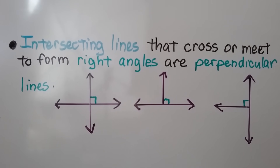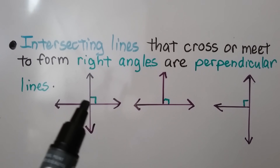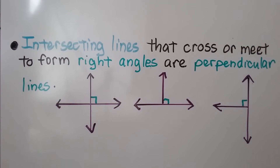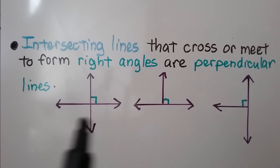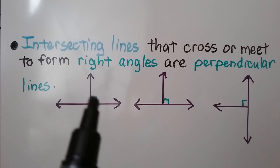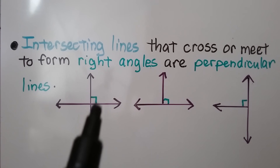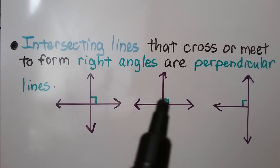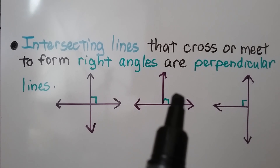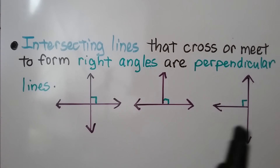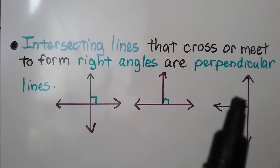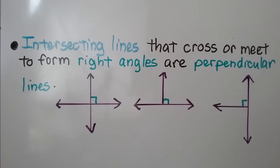Intersecting lines that cross or meet to form right angles are perpendicular lines. So these are all perpendicular lines because they make right angles in the middle here. We have two here, one on this side, one on this side, and we have one up here and one down here.